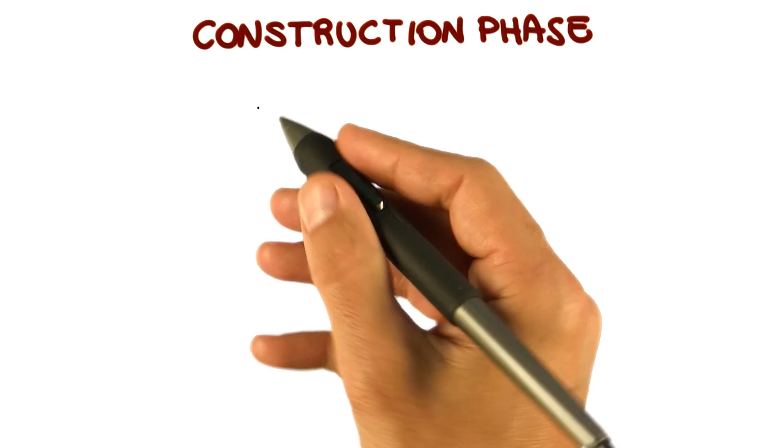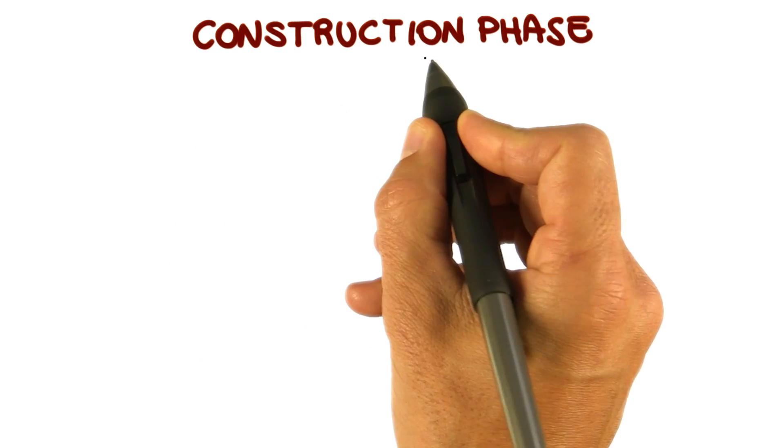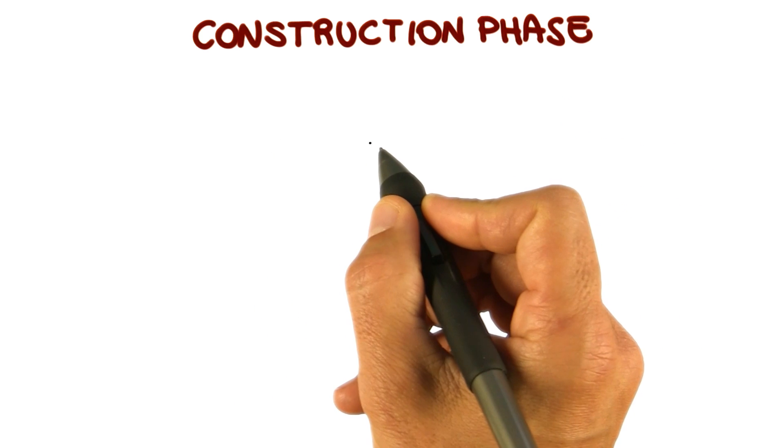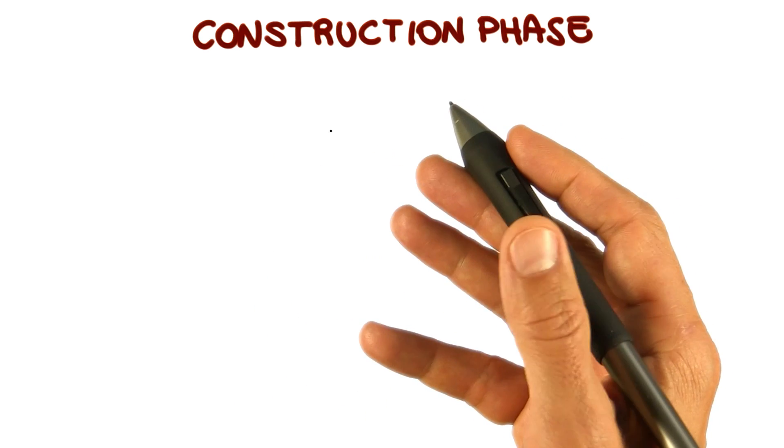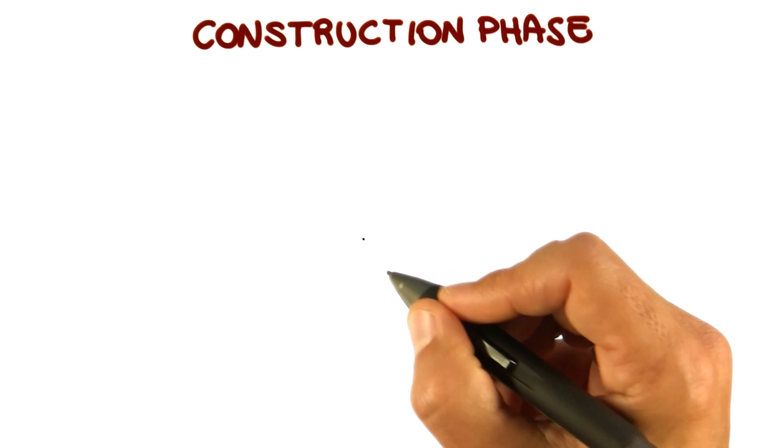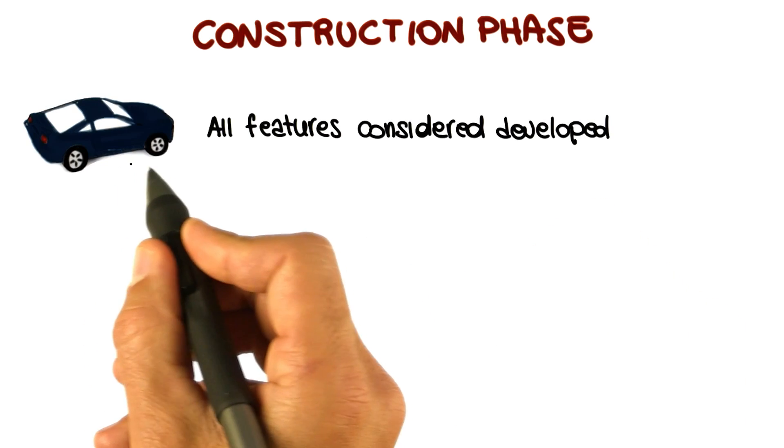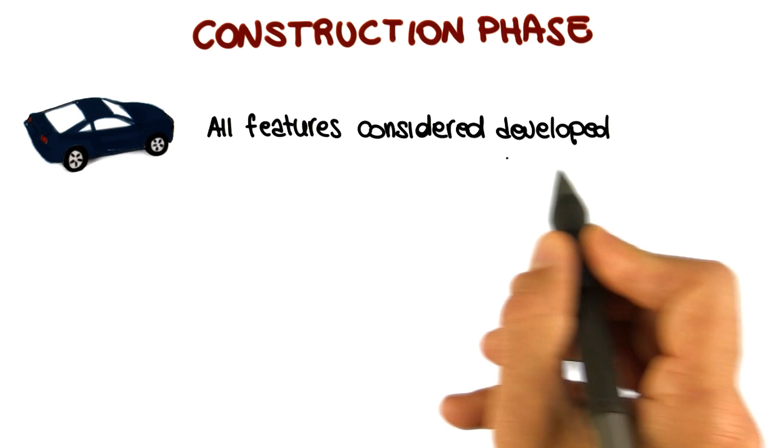If the elaboration phase is successful, we then move to the construction phase, which is our third phase. The construction phase is basically the phase in which most of the actual development occurs. In short, all the features considered are developed.